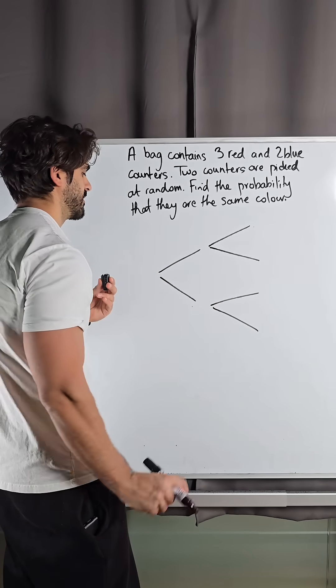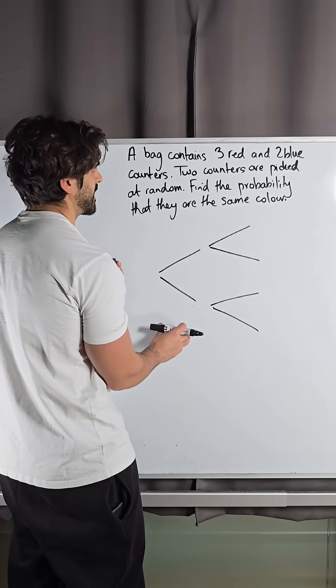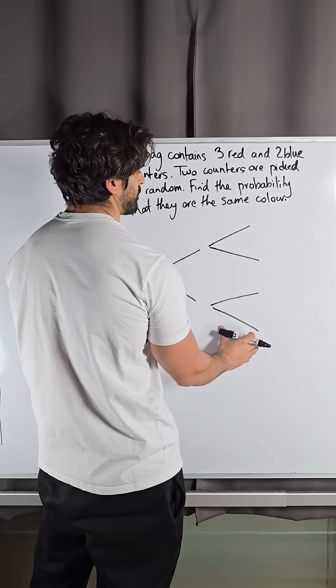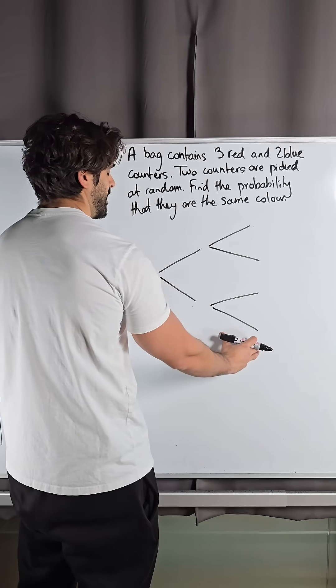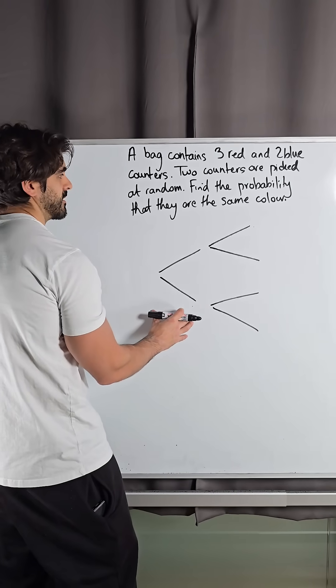So we have two sets of branches here. The first set of branches are the first take of a counter. The second set of branches are the second take of a counter, but they depend on whatever happened here.